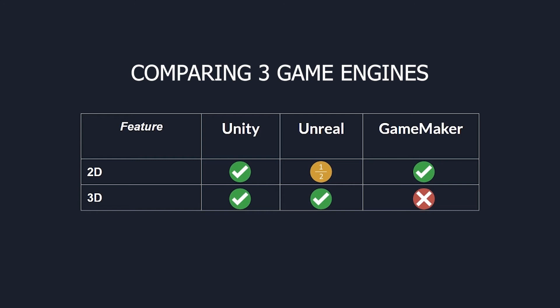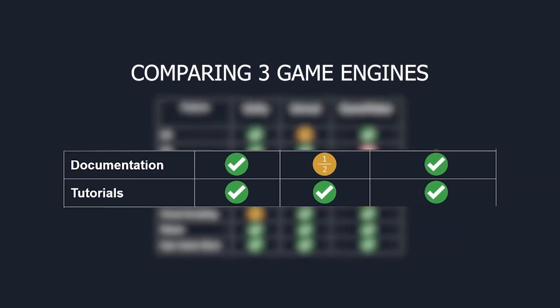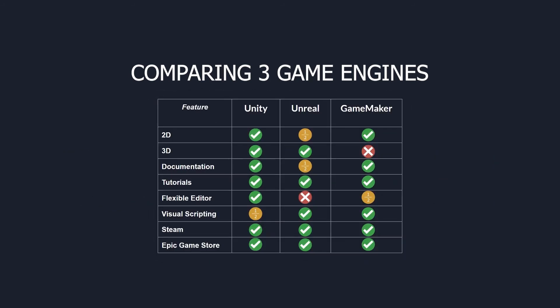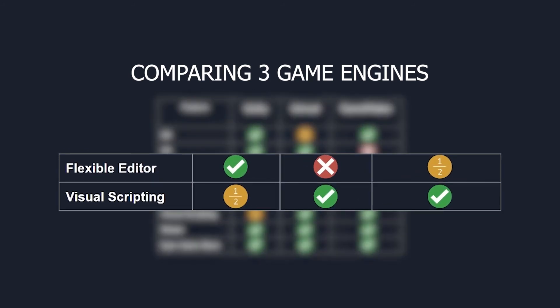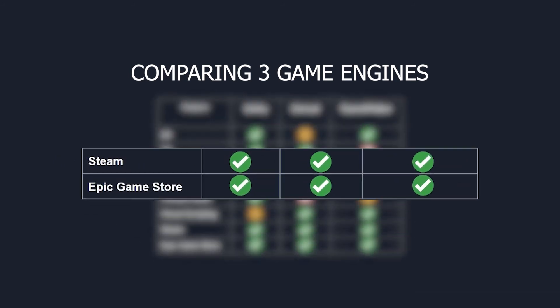I also think it's really important for new and experienced developers alike to have good documentation and good tutorials online. The Flexible Editor is kind of like those cool tools we were talking about before, and we can cover that in a later lesson. Unity doesn't support visual scripting by default, but you can download something from the Unity Asset Store to bypass the need to program things on your own. I've also included Steam and Epic Games Store rows just to show that all of these engines can publish games to common stores like Steam, Epic, Itch.io, and more.